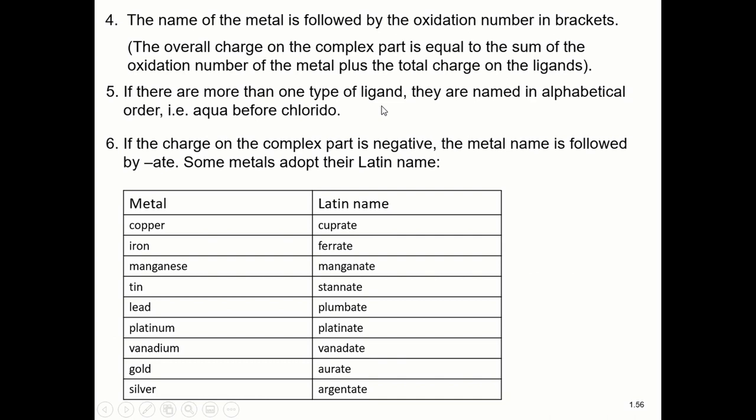If there's more than one type of ligand, they're named in alphabetical order. And if the charge on the complex part is negative, then the transition metal can adopt their Latin name, which are given here. So cuprate, ferrate, manganate. Lead's always my favourite. The Latin name for lead is plumbum. That's where the word plumber comes from, because pipes used to be made of lead. So this is if the transition metal complex is negatively charged, you would use these instead of just the metal name. If it's positively charged, you just use the metal name.